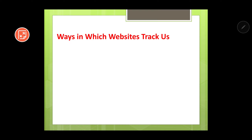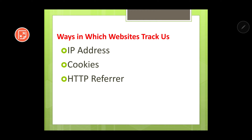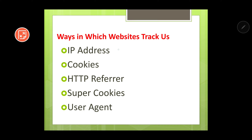When you visit a particular website, there are various ways in which websites can track us. The different ways are: first, IP address; second, cookies; third, HTTP referrer; fourth, super cookies; and fifth, user agent. Let's see them one after another.